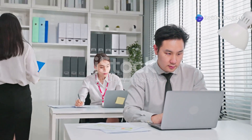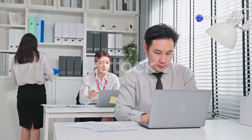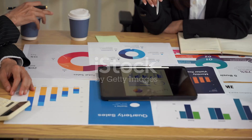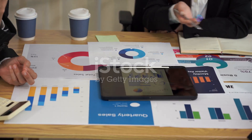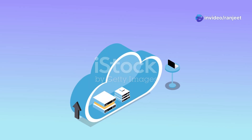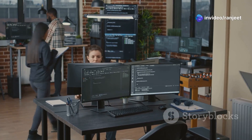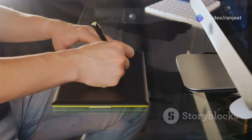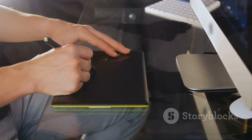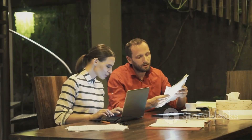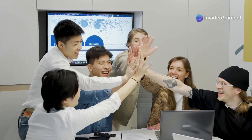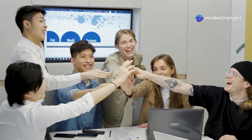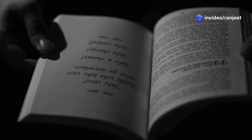In today's digital world, businesses need efficient ways to manage documents. This is where SAP BTP and Adobe Forms come in. They offer a powerful solution for creating, managing, and sharing documents. SAP BTP is a cloud-based platform that helps businesses build and run applications. Adobe Forms is a tool for creating digital documents. Together, they offer a seamless way to streamline document processes.